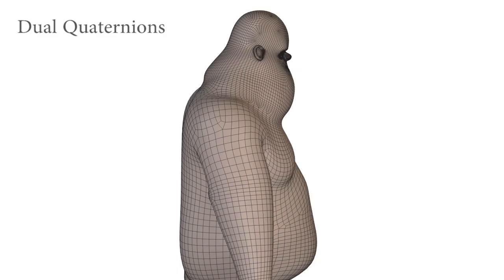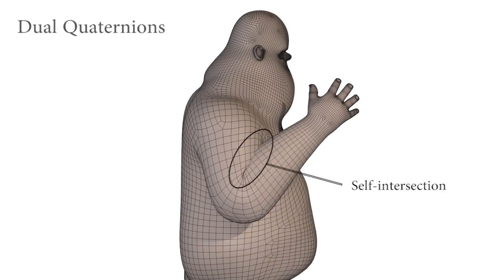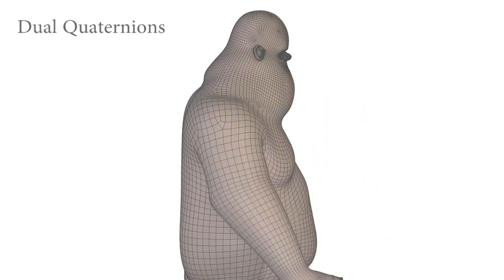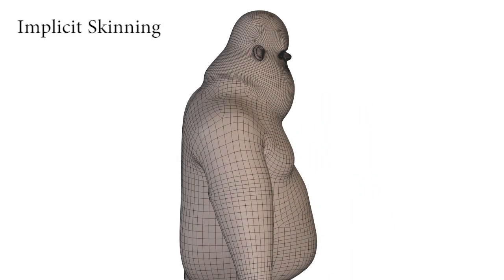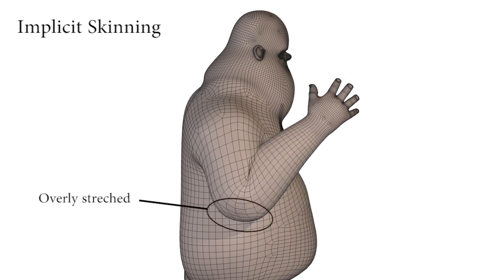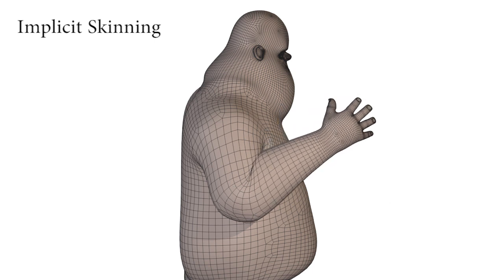Our approach improves stability and robustness in two ways. Firstly, for a large bend, dual quaternions typically produce self-intersections. Notice how the mesh is stretched at the elbow. Implicit skinning is also unable to correct the mesh's distortions, and when the self-intersections of dual quaternions are too deep, the projection on the implicit surface fails to produce the proper skin contact.